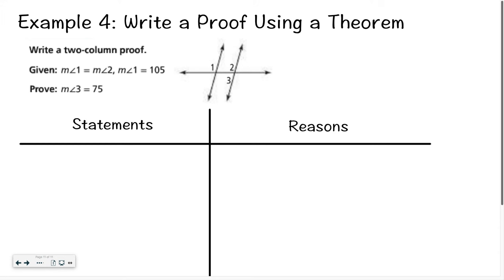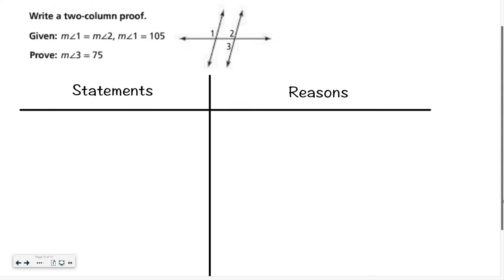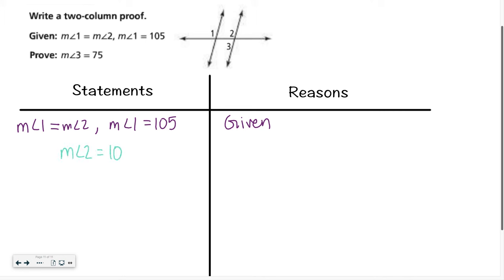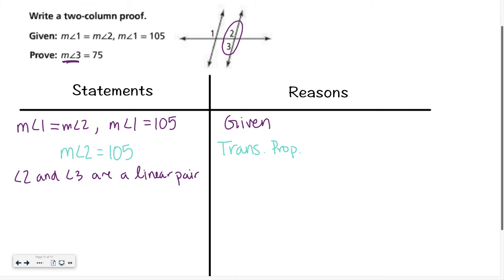Now our very last proof. We want to write a two-column proof with the given information. I start out by writing down all of my given information. Now that I've written down my given information, I want to see what else I know. I know the measure of angle 1 equals the measure of angle 2, and the measure of angle 1 equals 105. So that means I can say the measure of angle 2 equals 105, and that would be another example of the transitive property. Now that I know the measure of angle 2 equals 105, if I look at my picture I can see that angle 2 and angle 3 form a linear pair.